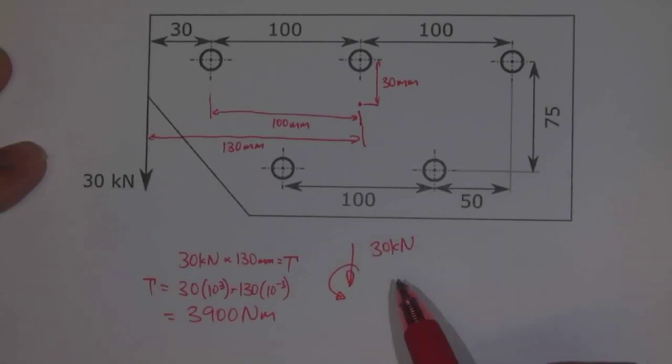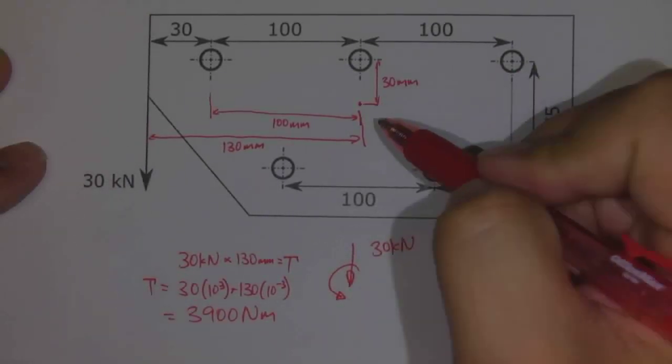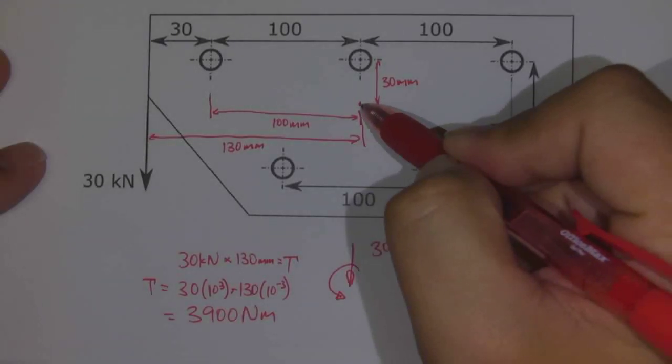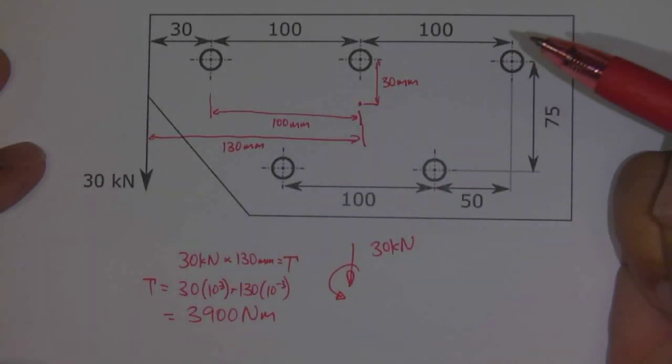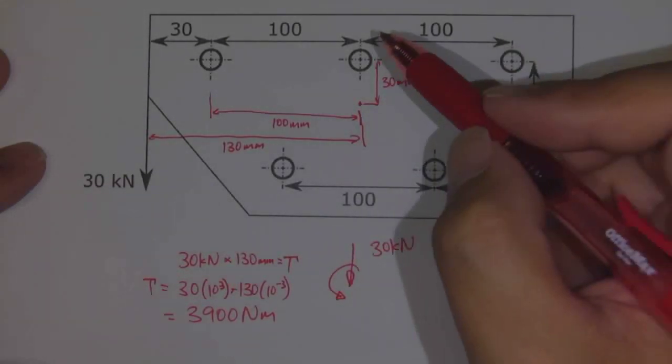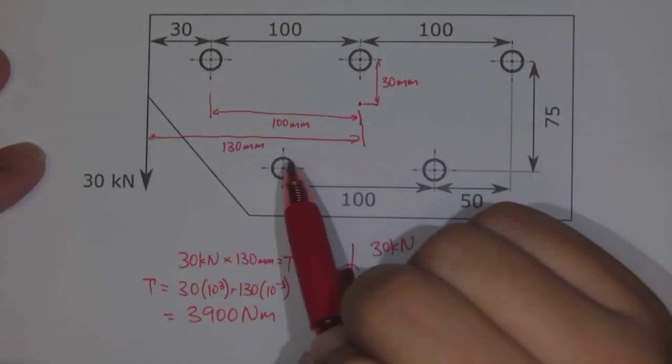Now that we've calculated the shear force and the torque acting around the centroid of that bolt group, we need to calculate the amount of force acting on each one of these bolts.